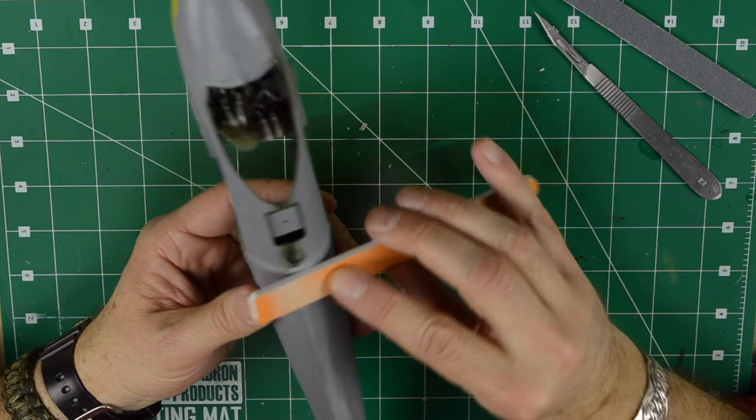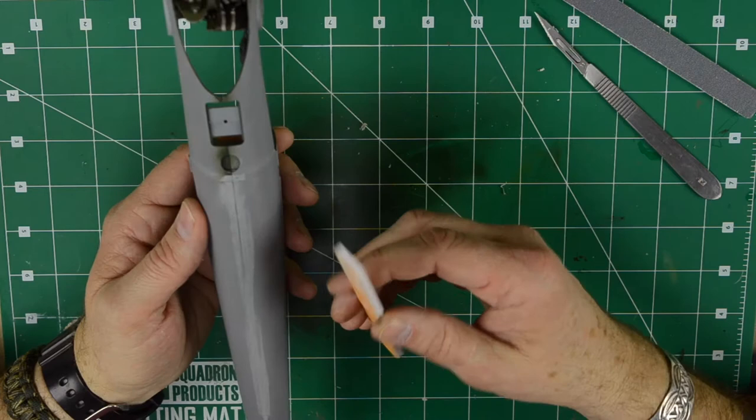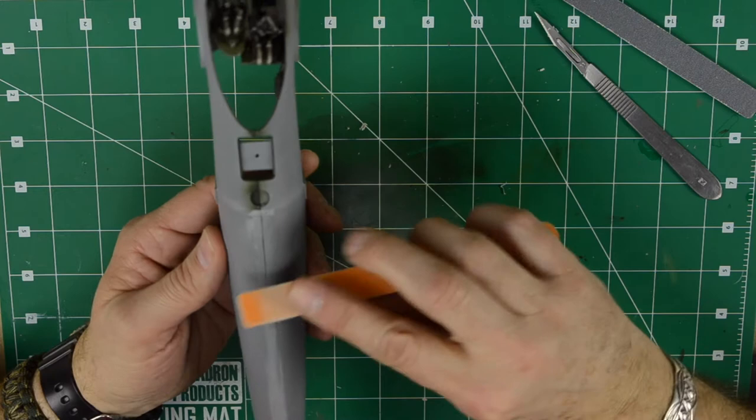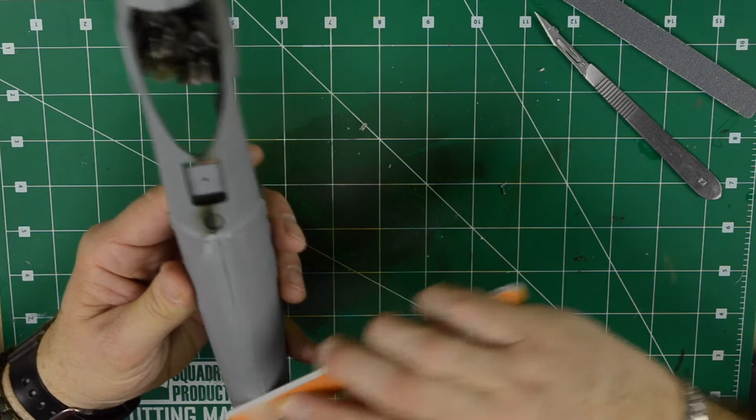Now these sanding sticks, it doesn't have to be necessary a sanding stick, you can use sandpaper. But I like the sanding sticks because it gives you even pressure all the way. And also you can use these with water. If you put some water on there, it tends to speed up the process.